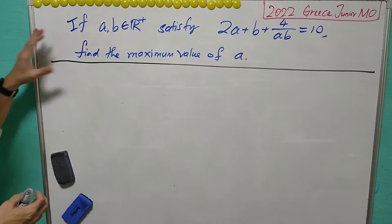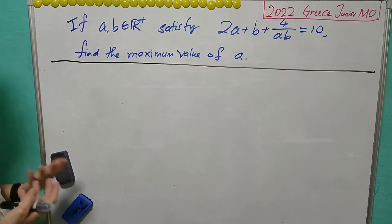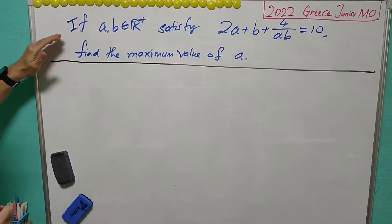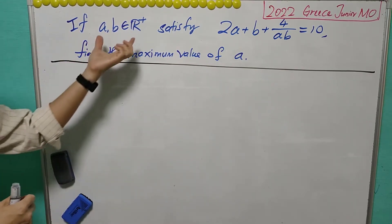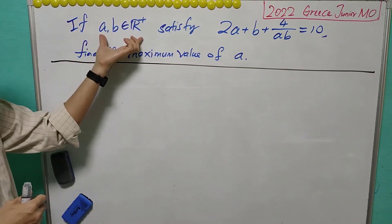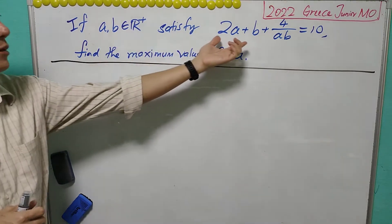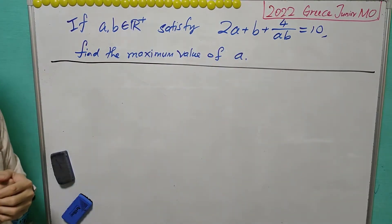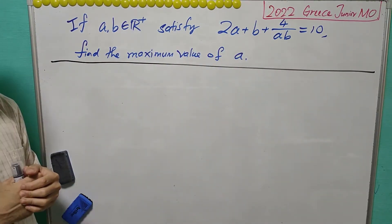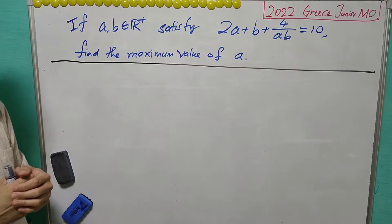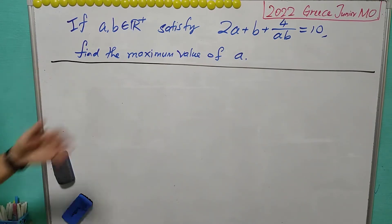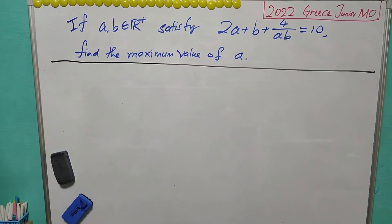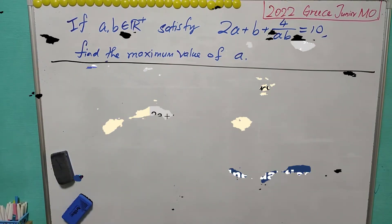The first question looks a little bit simple. It says that if A and B are real positive numbers satisfying 2A plus B plus 4 over AB equals 10, we are asked to find the maximum value of A.